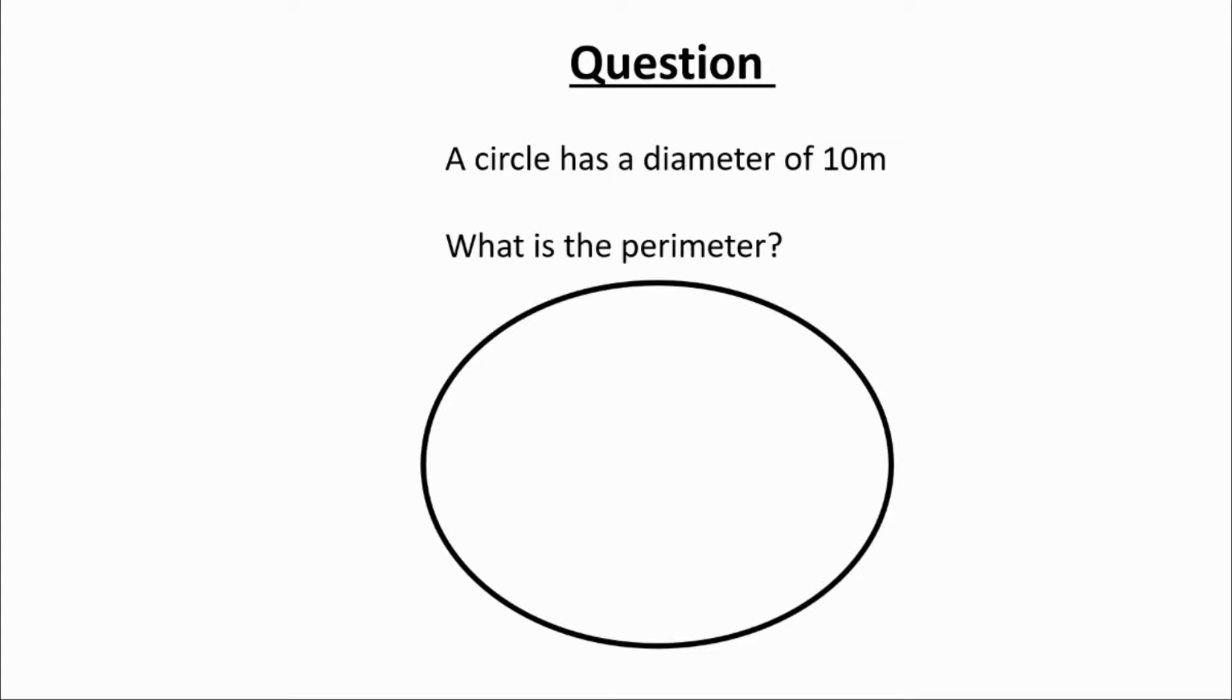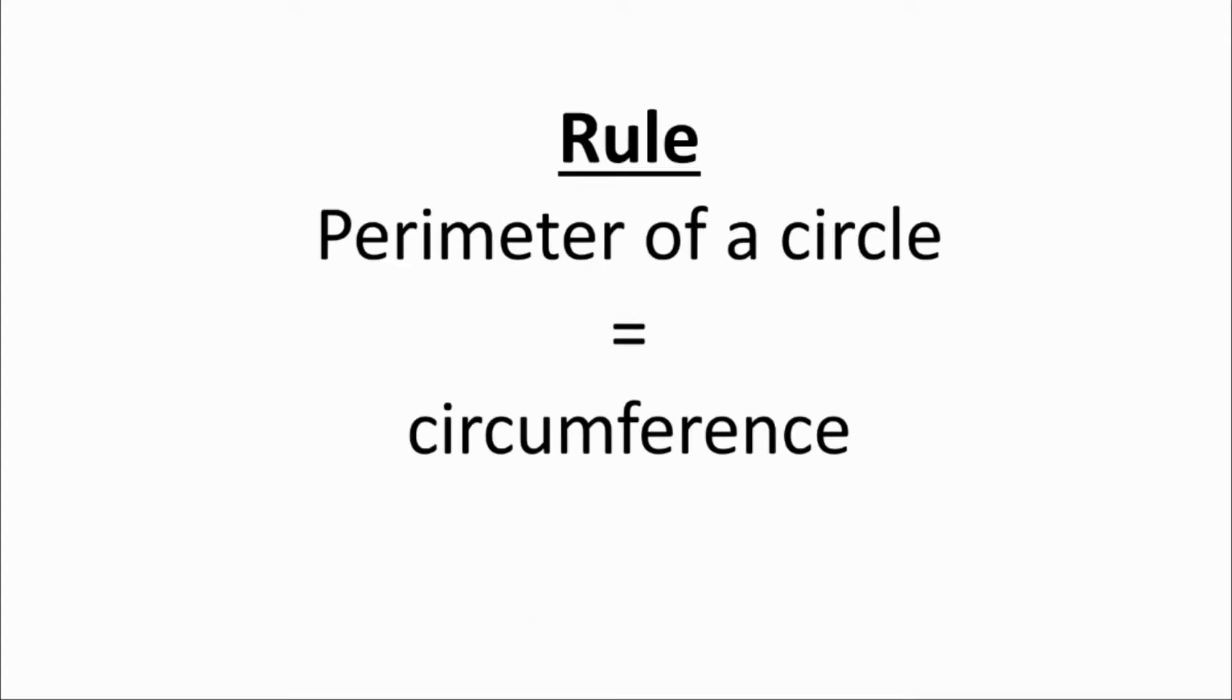And the first step in being able to do this question is to understand a simple definition, which is that for a circle, the perimeter of a circle, that is the distance around the outside, has a specific name. We call that the circumference.